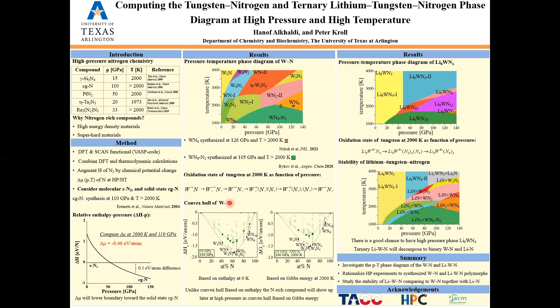A different concept to discuss thermodynamic stability is the convex hull. A convex hull is a set of phases which have positive reaction energy for decomposition into any combination of neighboring phases. Typically, it is constructed based on enthalpy and obtained at 0 Kelvin, and it predicts the outcome of solid-state reactions where nitrogen is not involved. For that reason, we provide a convex hull based on Gibbs energy at 2,000 Kelvin. Unlike the convex hull based on enthalpy, nitrogen-rich compounds will show up at high pressure in the Gibbs energy-based convex hull.